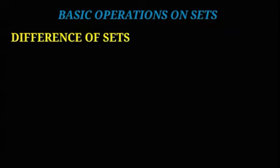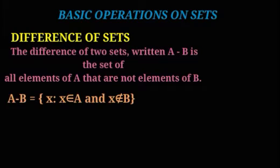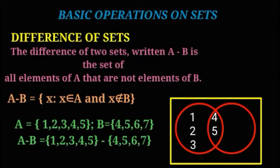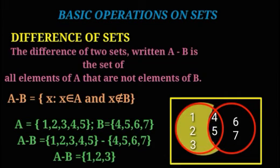Difference of sets: the difference of two sets, written A minus B, is the set of all elements of A that are not elements of B. A − B = {x | x belongs to A and x does not belong to B}. For example, if A = {1, 2, 3, 4, 5} and B = {4, 5, 6, 7}, then A − B = {1, 2, 3}.